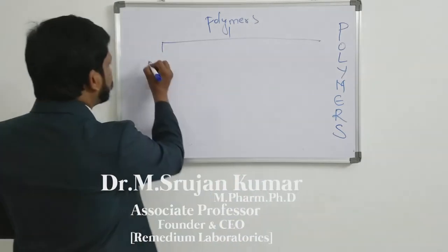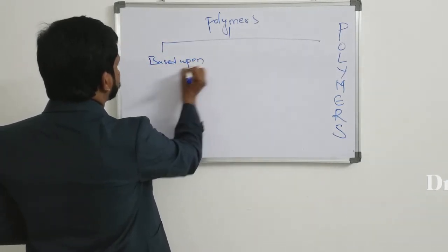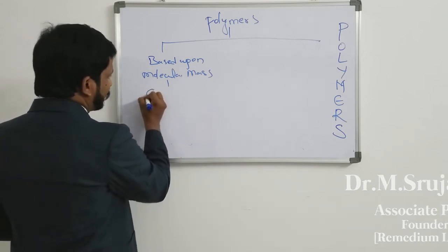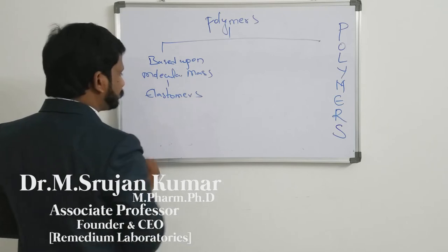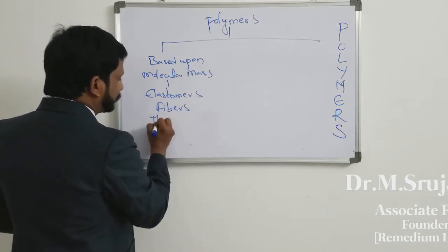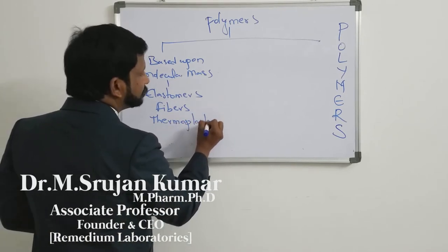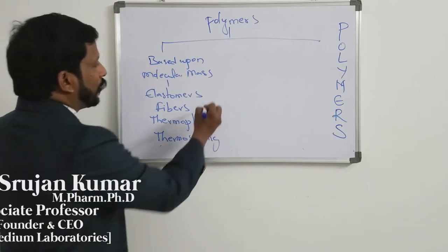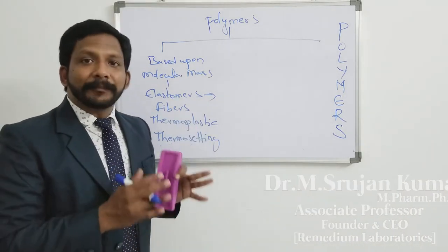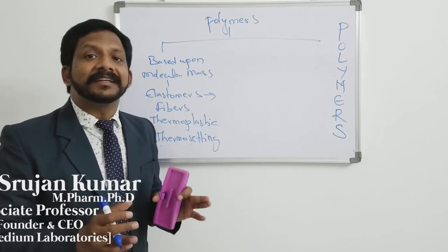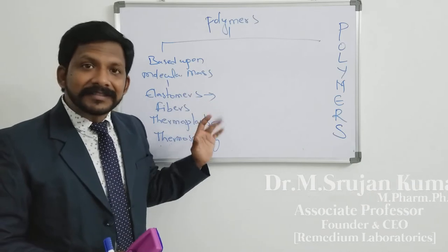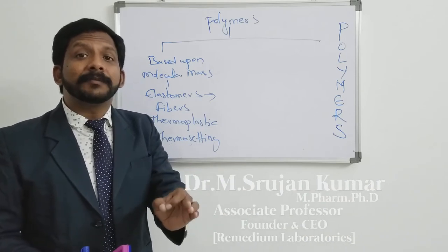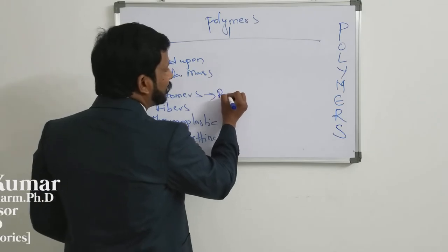Now, based upon molecular mass, it is again divided into four types. The first one is elastomers, next fibers, next thermoplastic, and next thermosetting. Elastomers are the polymers having viscoelasticity with weak intermolecular forces. The examples for elastomers are rubbers. Fibers — these are the polymers obtained from fibers. The example is cellulose fibers.